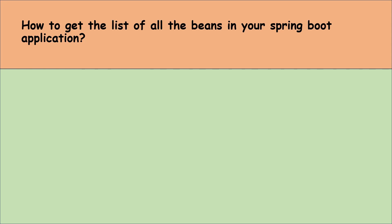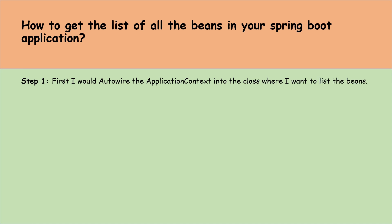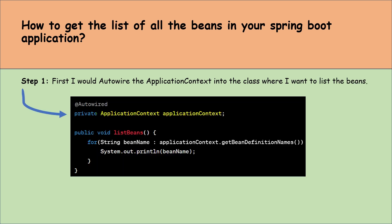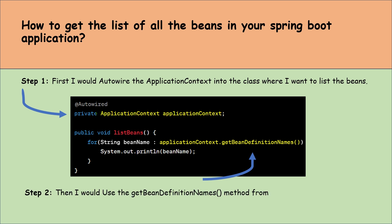Hey everyone, in this Spring Boot interview question series I am covering real, challenging and tricky questions. So let's get started. How to get the list of all the beans in your Spring Boot application? First I would auto-wire the application context into the class where I want to list the beans, as you can see in the code. Then I would use the getBeanDefinitionNames method from the application context to get the list of beans.